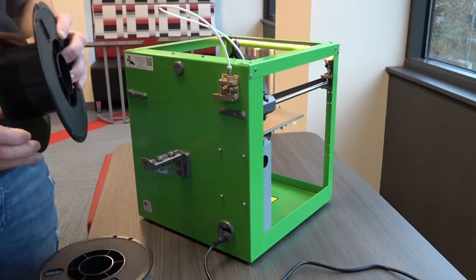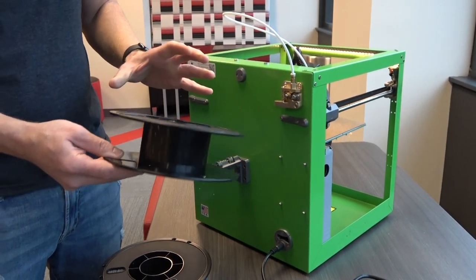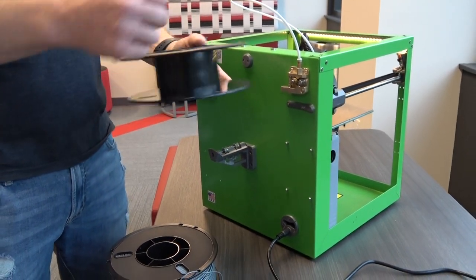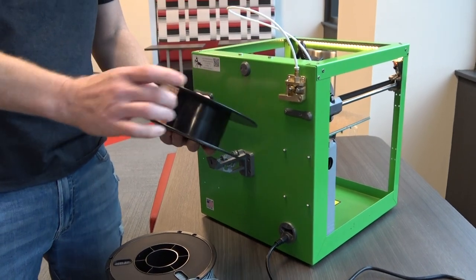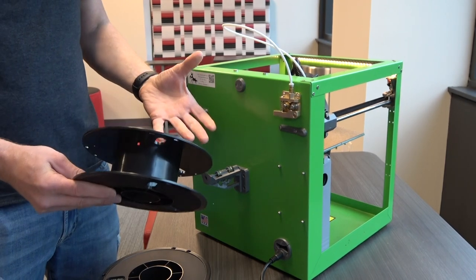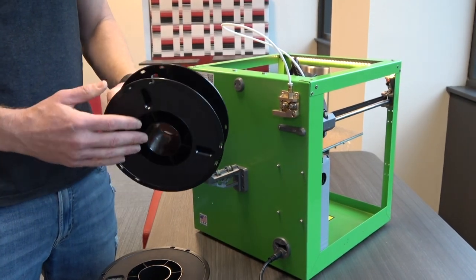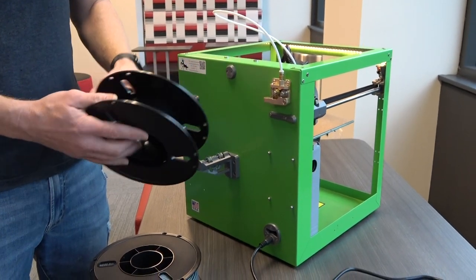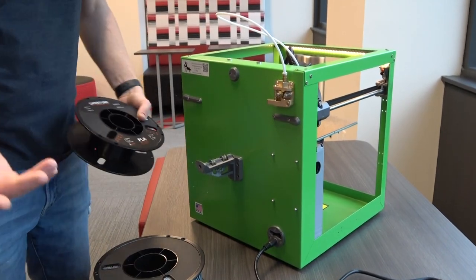Do whatever you want with them. If you actually go on Thingiverse, there are some people who have created little nifty designs that you can 3D print and put in there to make a little chest of drawers that go all the way around the outside. I've seen a bunch of different repurposing of the roll, but it's up to you—you can throw it out or recycle it, whatever makes you happy.